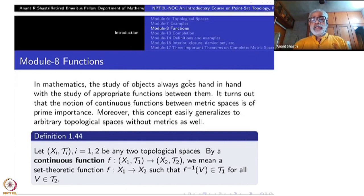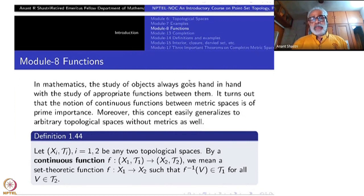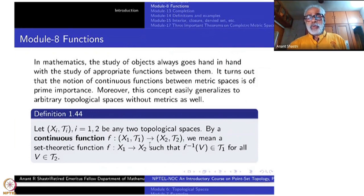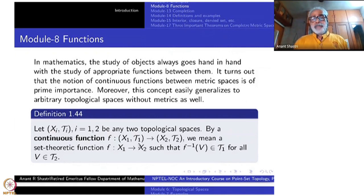The new definition we are going to make should always encompass older definitions — that must be the motivation — and it should give you more. So let us make the definition of continuous functions between two topological spaces. Let (X₁, τ₁) and (X₂, τ₂) be two topological spaces. A set-theoretic function from X₁ to X₂ will be called continuous provided the inverse image of every open set in τ₂ is open in τ₁: if V is in τ₂, then f⁻¹(V) must be in τ₁.